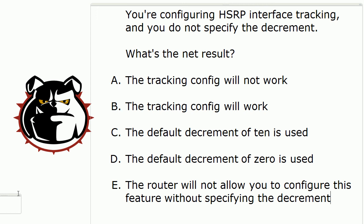You're configuring HSRP interface tracking and you do not specify the decrement. What is the net result? Will the tracking config not work? Will it work? Will it use a default decrement of 10? Will it use a default decrement of 0? Or, as we've seen so many times on live equipment, will the router not allow you to configure this feature without specifying the decrement?